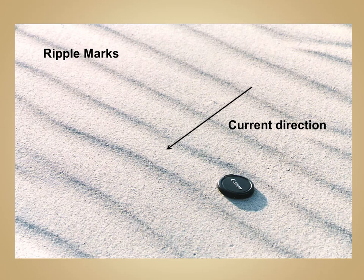Ripple marks are a sedimentary feature that forms on the surface of a sediment layer by a moving current, typically wind or water. These features are ridges that form perpendicular to the motion of the current. In this image, you can see sand-sized particles being transported by wind, forming these ridges perpendicular to the current direction.